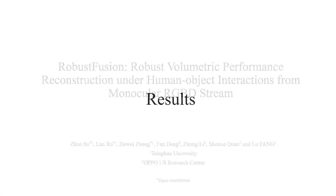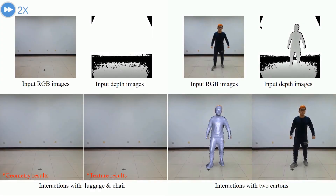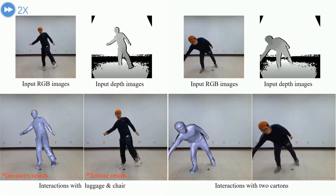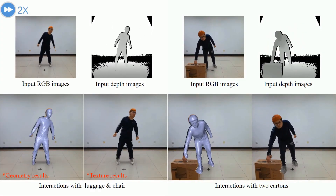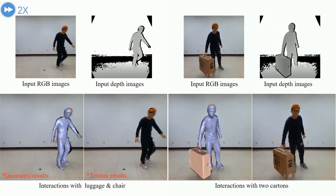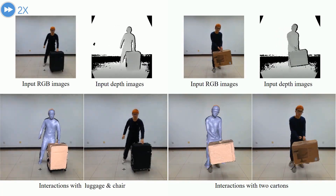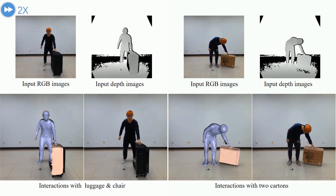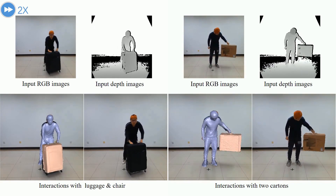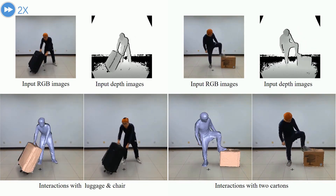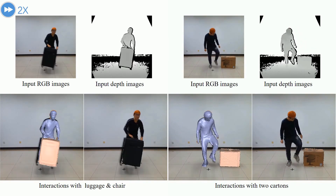We propose Robust Fusion, a robust volumetric performance reconstruction system for complex human-object interaction scenarios using only a single RGBD sensor. Our approach can handle challenging scenarios with complex interactions and severe occlusions by combining various data-driven visual and interaction cues.